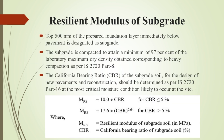The top 500 mm of the prepared foundation immediately below the pavement is designated as subgrade. The compaction at the subgrade must be 97% of the maximum dry density obtained at the laboratory. The resilient modulus can be calculated by the equation provided in IRC 37:2018 for CBR less than or equal to 5% and greater than 5% separately, as mentioned in the slide.